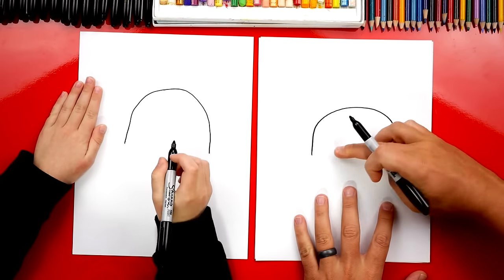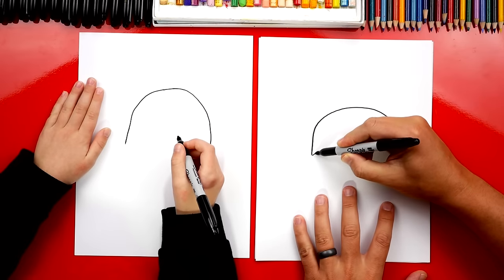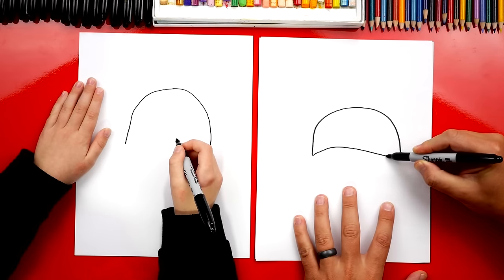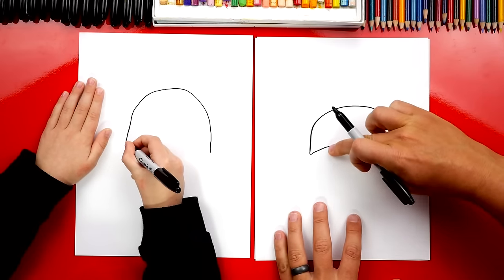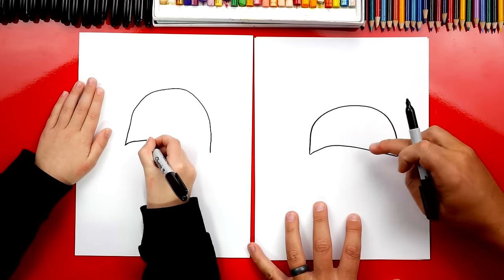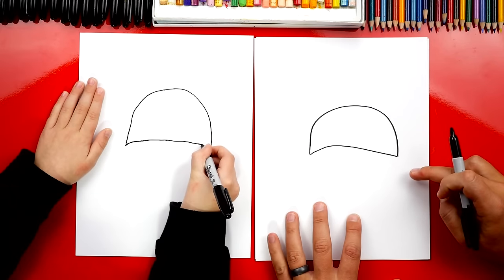Now we're gonna draw a curved line to connect the bottom. So we're gonna come up like this and then back down. See how it's curved? Maybe a little more over here on the left side and then straight. There you go. You did it.